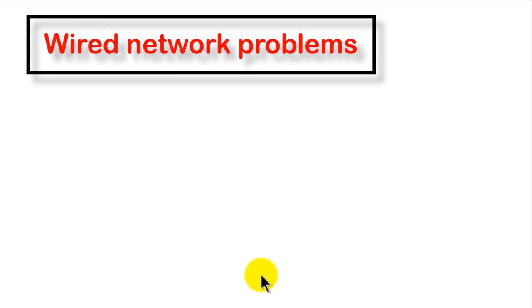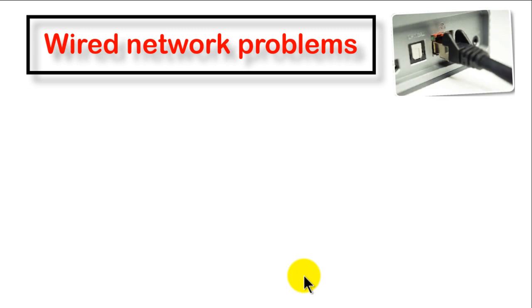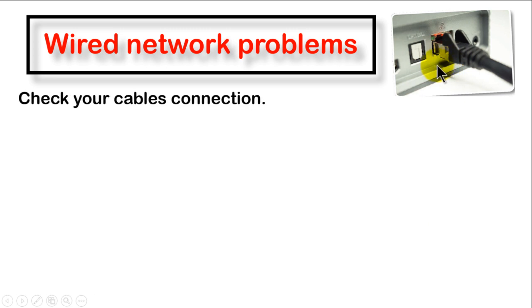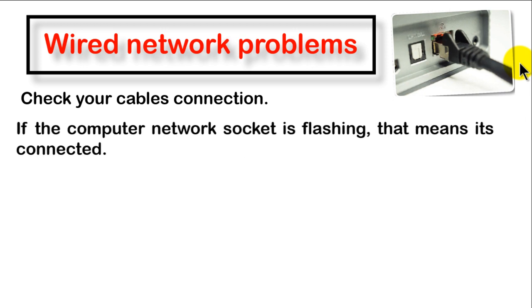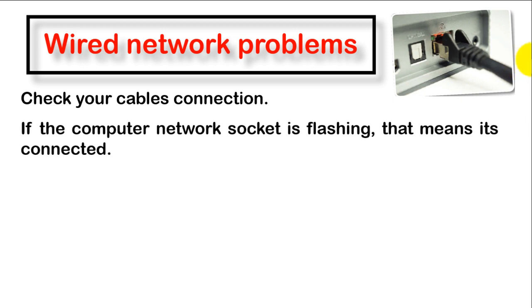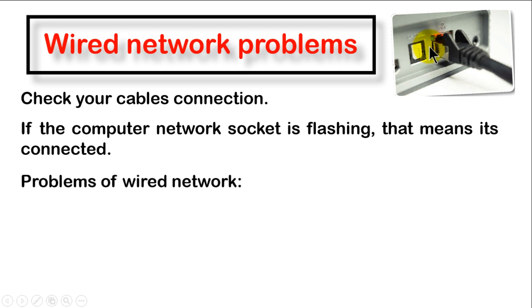Now, for wired network problems — look at the picture showing a cable connected to your computer. To solve this problem, always check your cable connection on your device and at the network point or socket. Check whether the computer's network socket is flashing, because if it is flashing, it means it's connected. If it's not flashing, there is a problem with your network connection.